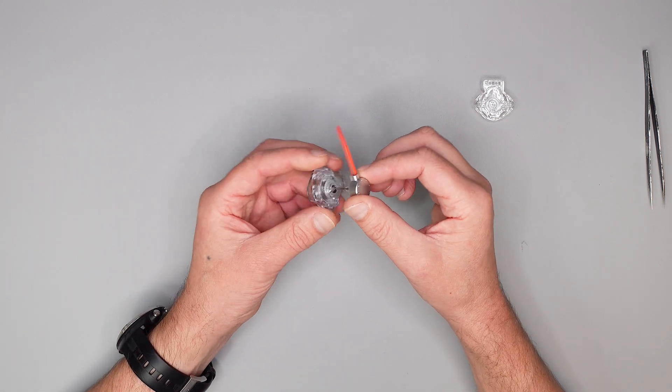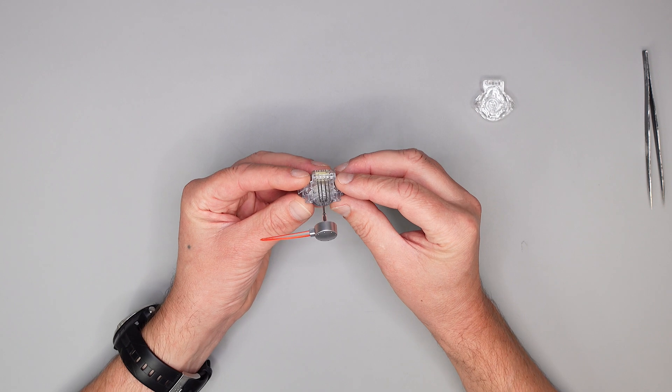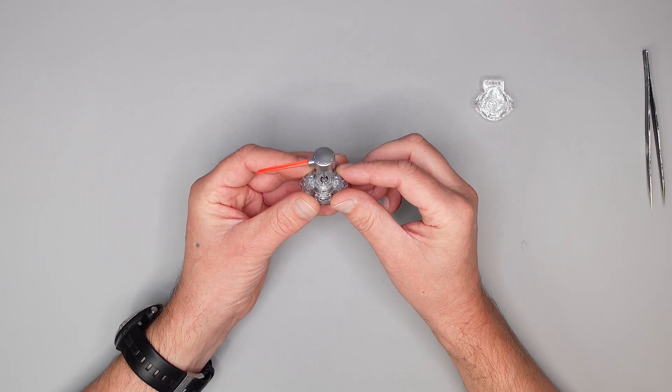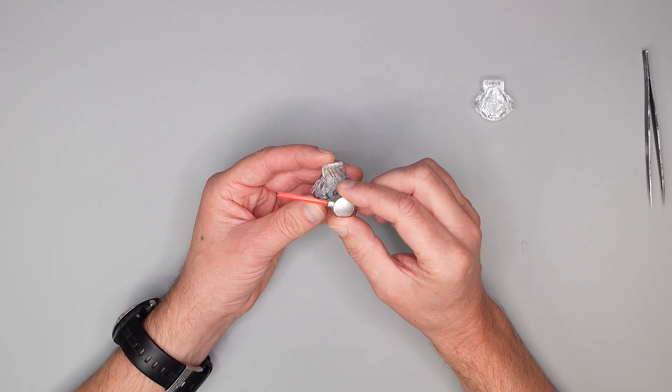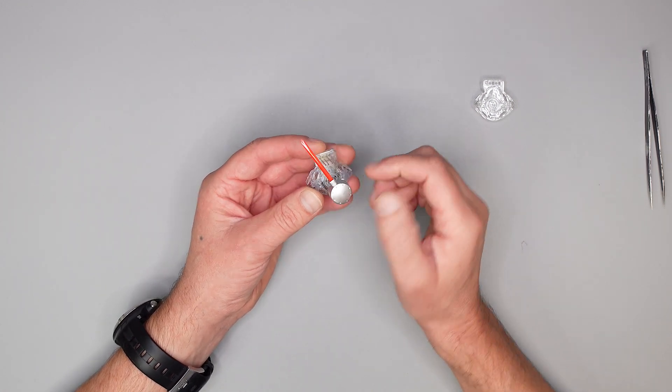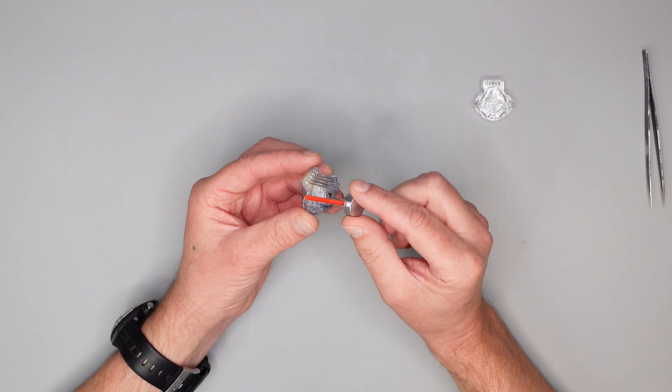Jetzt zeige ich euch mal wo der Fehler liegt, wenn die Tachonadel sich nicht mehr bewegt oder nur noch schrittweise ruckelt oder irgendwo stehen bleibt. Ich habe mal hier den Zeiger aufgesetzt.